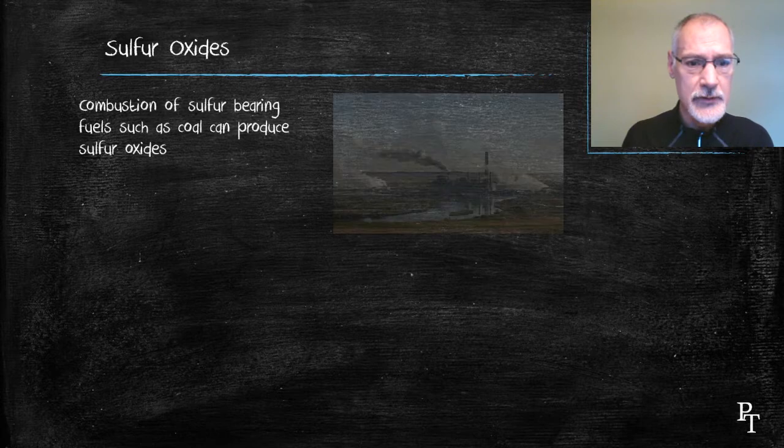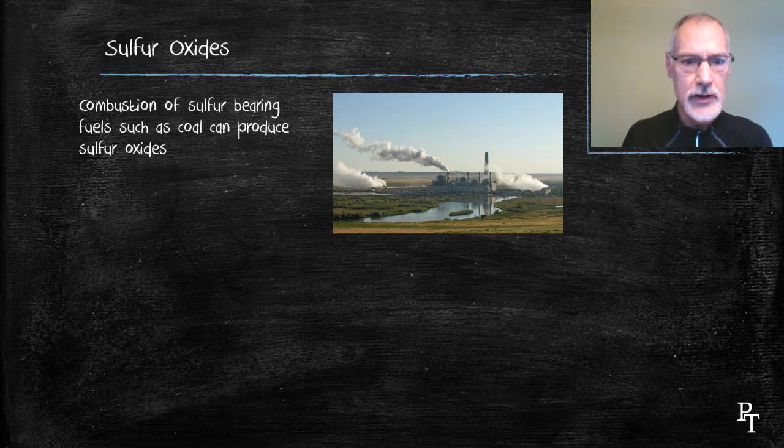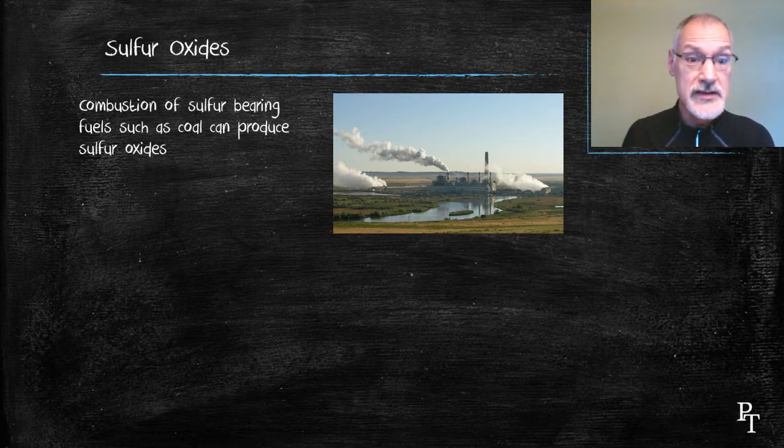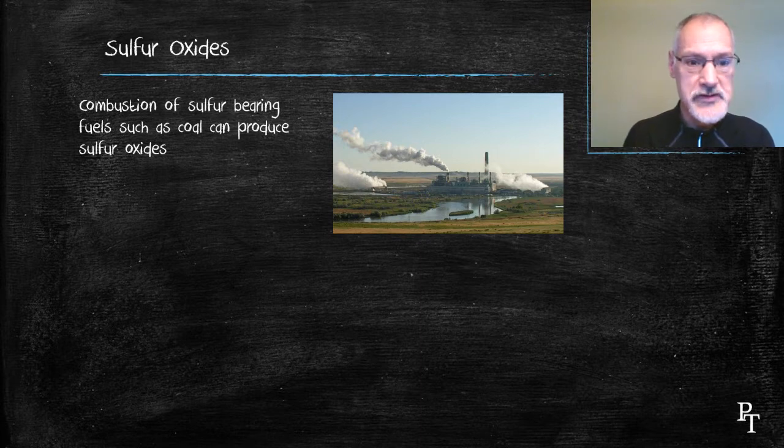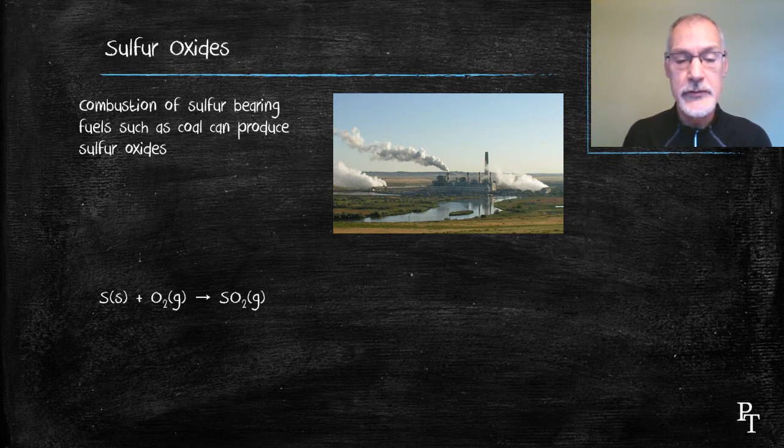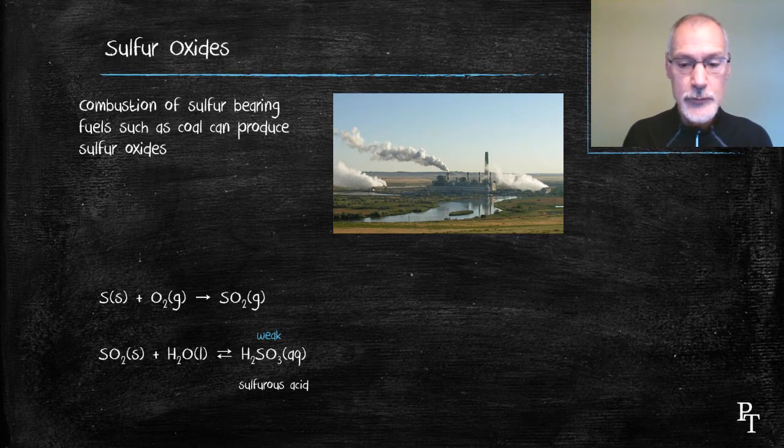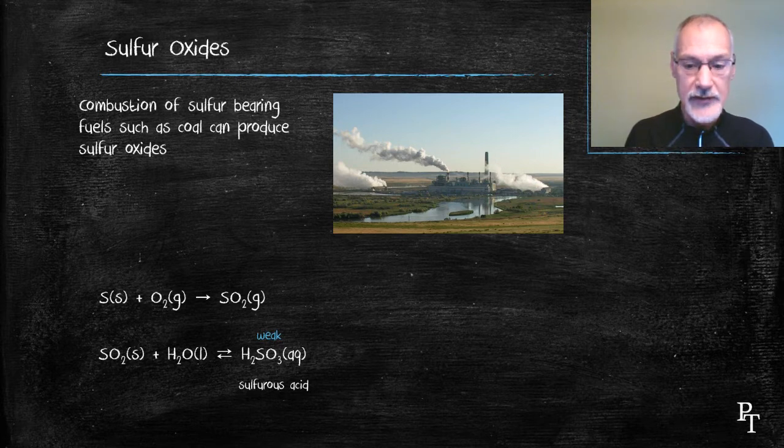Sulfur oxides enter the environment in a different manner. Basically the combustion of sulfur-bearing fuels releases sulfur oxides. For instance, the combustion of coal. Coal can contain anywhere between one to seven percent sulfur. So when sulfur and oxygen combine, they produce sulfur dioxide. That can then mix with water to produce the weak acid, sulfurous acid.